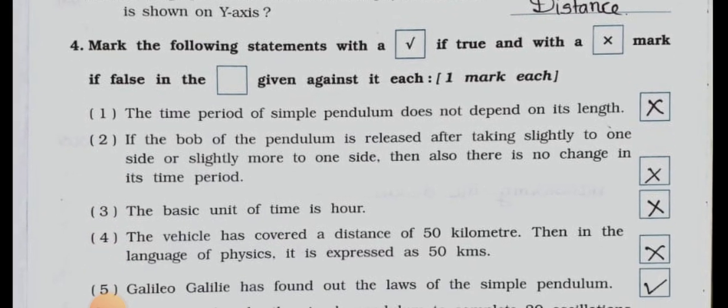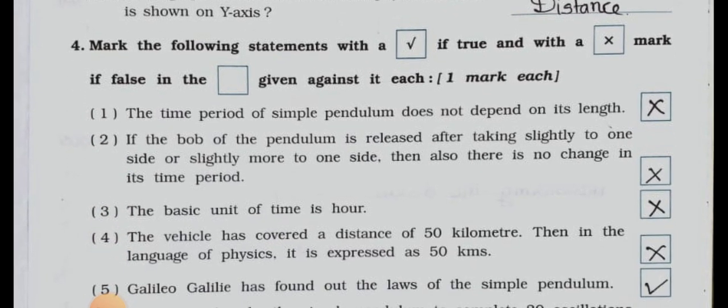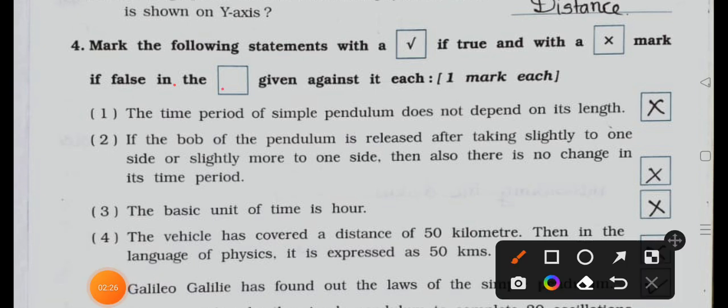Now see the main four: mark the following statements with a true if true and with a wrong mark if false in the box given against each, one mark each. Number one: the time period of simple pendulum does not depend on its length. It's false, wrong.